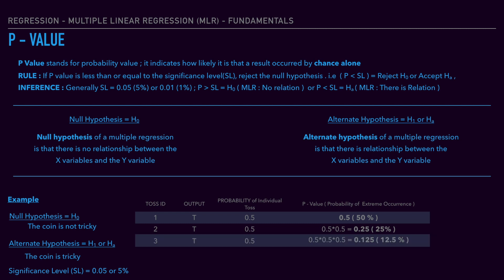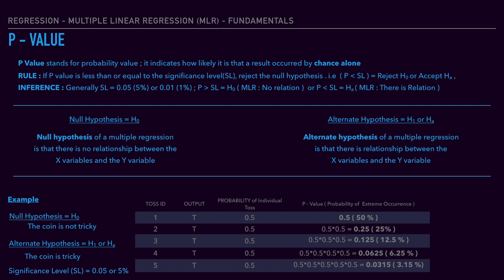Let's toss again. After four continuous tails, the P-value becomes 6.25%. We toss a fifth time and get tail again. The P-value is now 3.15%, which means there is only a 3% chance of this occurring. We now conclude this is a tricky coin.